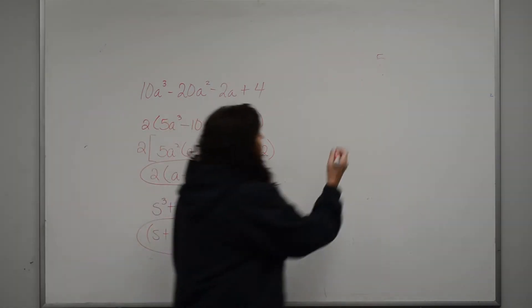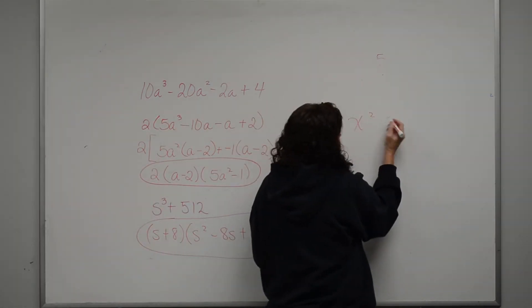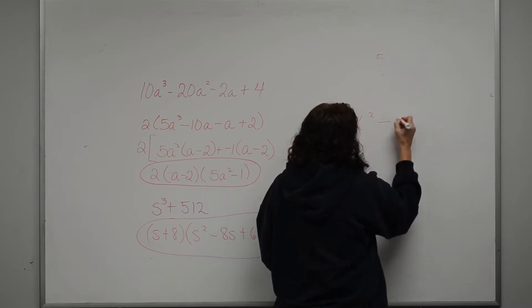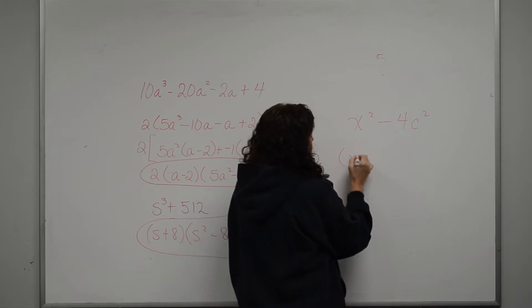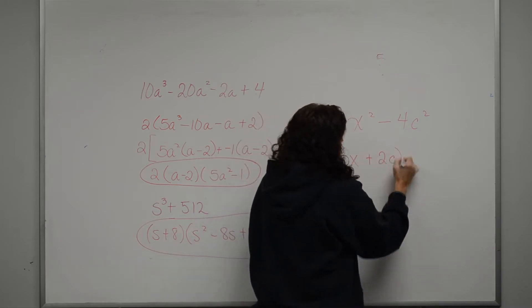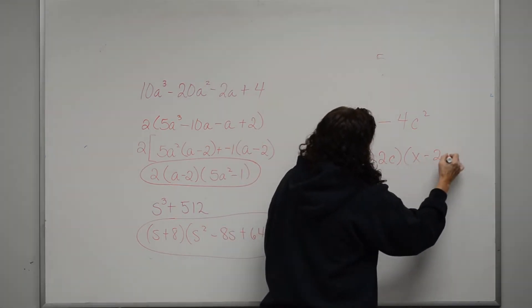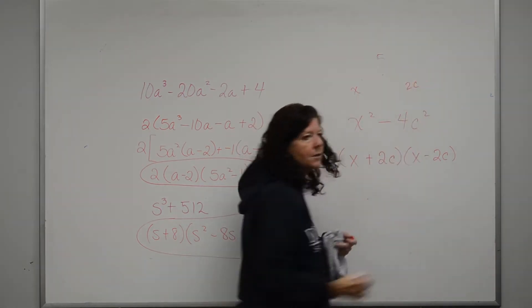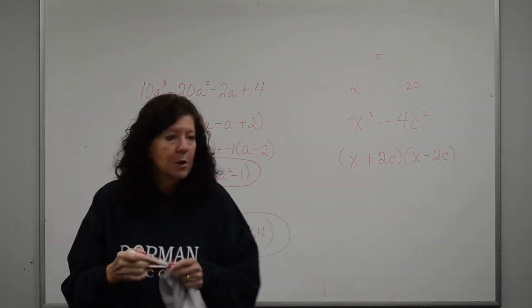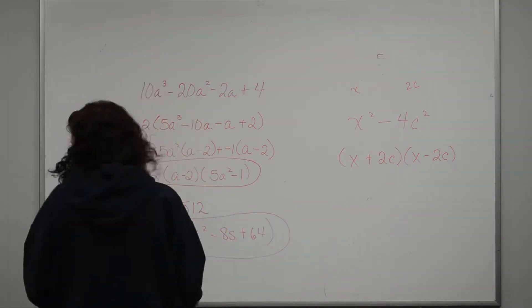Difference of squares looks something like this. Let's say I had x squared minus 4c squared, like that. I would go x plus 2c times x minus 2c. Because remember, you're taking the square root. If you can take an even square root, and it's a difference problem, you can do it.